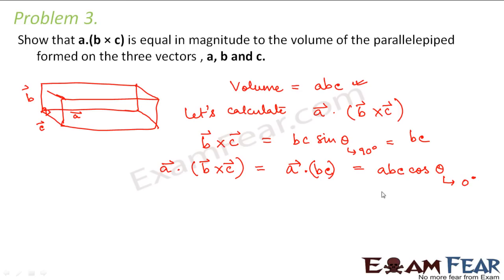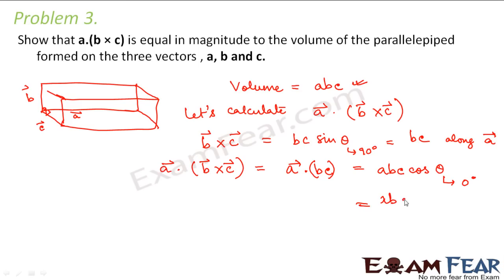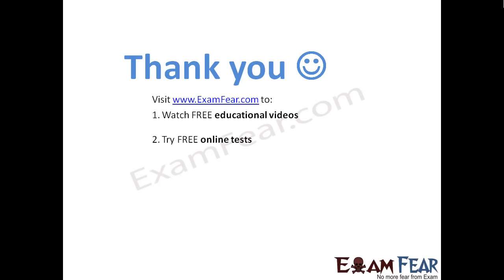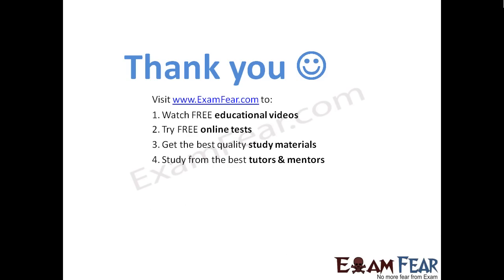Since theta equals zero, cos 0 is 1, so this becomes equal to ABC. And ABC is nothing but the volume of the parallelepiped. Thank you. Please visit examfio.com to watch free educational videos, try free online tests, get the best quality study materials, study from the best tutors and mentors, and much more. Thank you once again.